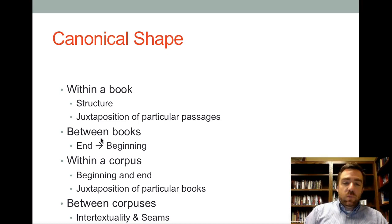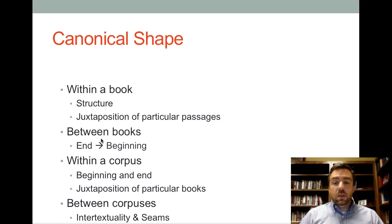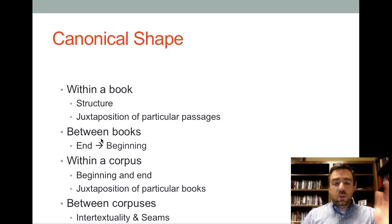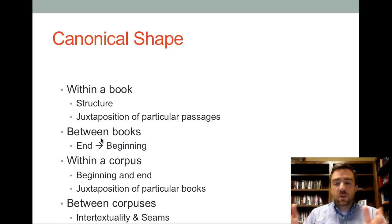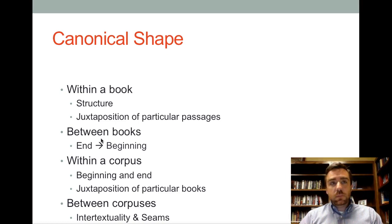Within a particular corpus, the beginning and end of that corpus matter. For example, the prophets in the Old Testament — you have the Pentateuch, the prophets, and then the writings. At the beginning and end of the prophets, you have Joshua/Isaiah and Hosea at the beginning of the minor prophets, giving you this repetition of salvation at the beginning and end of the prophets. You can also see juxtaposition of particular books — in the minor prophets, it alternates: judgment, salvation, judgment, salvation.